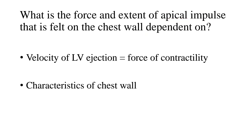Those are examples of abnormal apical impulses. The second factor is the characteristics of the chest wall. Chest wall deformities, obesity with thick chest walls, significant intervening lung tissue, a fixed rib cage as in ankylosing spondylitis, or elderly patients — all of these have difficulty transmitting the apical impulse to the superficial chest wall, and in those cases you may not detect the apical impulse at all.